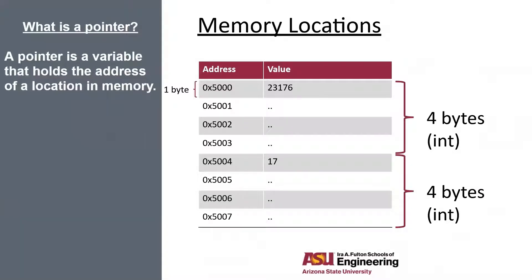So let's go over memory addresses. In this table, we've got a set of memory addresses and values. Anytime we store anything in memory, it gets a corresponding memory address. Here we're storing two integers and each integer is four bytes large. When we're storing two four-byte integers, we need eight memory locations to store them all. Here we've got the value 23176 and it's associated with the address 0x5000. No matter how big or small the value is, it's always going to take four bytes for integers. So even something as small as 17 is still going to take up four whole bytes.